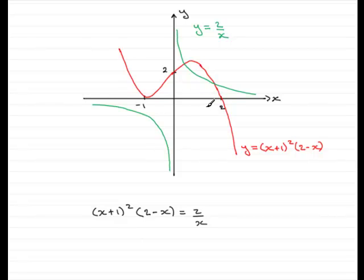So how many solutions are there? Well, it's just given by the number of places where the graphs intersect, and that's clearly two points, one here and one here.